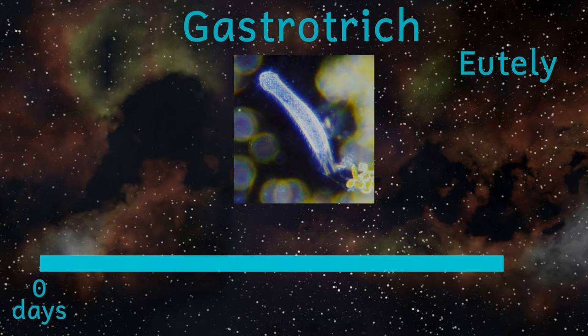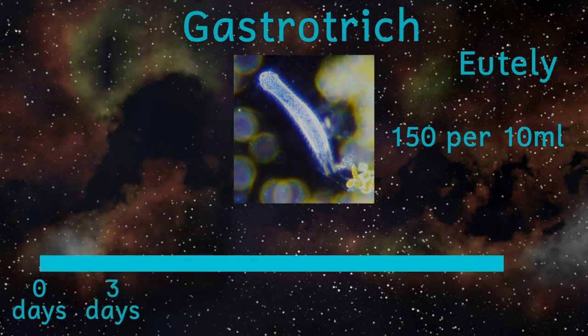Despite you probably never having heard of them, gastrotrichs are surprisingly numerous, with up to 75 gastrotrichs per teaspoon of fresh water. The shortest living gastrotrichs reach sexual maturity in two days and have a lifespan of just three days.